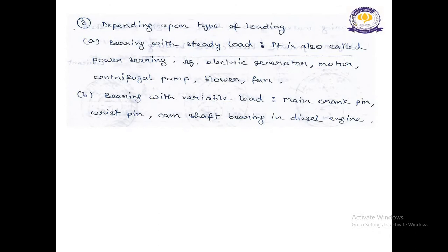Number three, depending upon type of loading, the bearing can be classified as number A, Bearing with Steady Load, and number B, Bearing with Variable Load. Now, the bearing with Steady Load, it is also called Power Bearing, example, Electric Generator, Motor, Centrifugal Pump, Blower, Fan. And bearing with Variable Load is Main, Crank Pin, Wrist Pin, Camshaft Bearing in Diesel Engine.